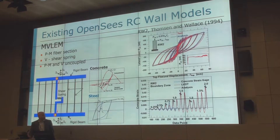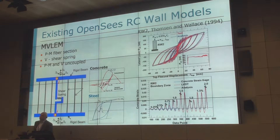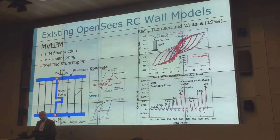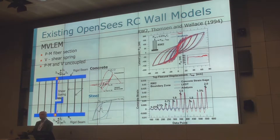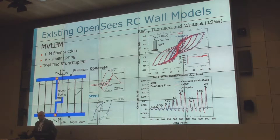A little bit of background. There are two models for shear walls that we implemented in OpenSees maybe about three or four years ago. One is called the Multiple Vertical Line Element Model (MVLEM). It's a standard model for reinforced concrete walls with a fiber section used to describe the flexural behavior. Shear behavior is described with a shear spring, and these two — shear and flexural — are uncoupled. This is a fairly standard approach, similar to Perform3D, implemented in OpenSees as a two-node beam column element.